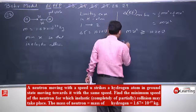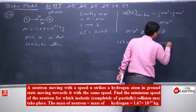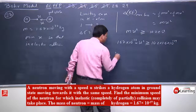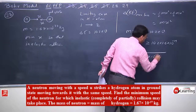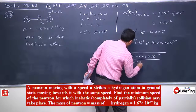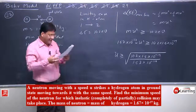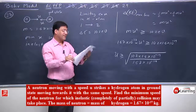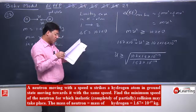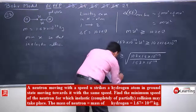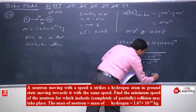Substituting: 1.67 × 10⁻²⁷ × u² must be greater than or equal to 10.2 × 1.6 × 10⁻¹⁹ J. So u must be greater than or equal to the square root of (10.2 × 1.6 × 10⁻¹⁹) / (1.67 × 10⁻²⁷). Upon solving, u must be greater than or equal to 3.13 × 10⁴ meters per second. If the neutron's velocity exceeds this value, the energy loss is sufficient and the collision will be inelastic.